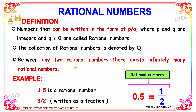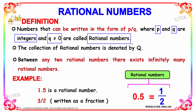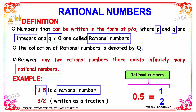Now let's look at rational numbers. Numbers that can be written in the form p divided by q, where p and q are integers and q is not equal to 0, are called rational numbers. The collection of rational numbers is denoted by the letter Q. Between any two rational numbers there exist infinitely many rational numbers. For example, 1.5 is a rational number and can be rewritten as 3 divided by 2.